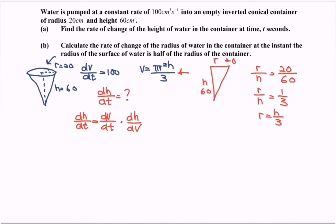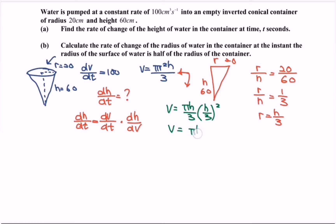Substituting r = h/3 into the volume formula, we get V = π(h/3)²(h) / 3 = π(h²/9)(h) / 3, which simplifies to V = πh³ / 27.